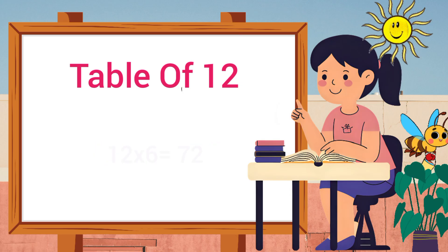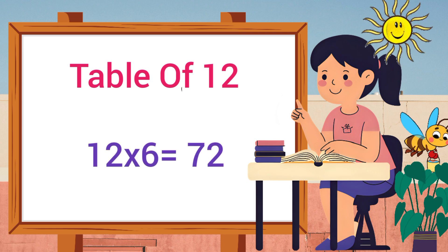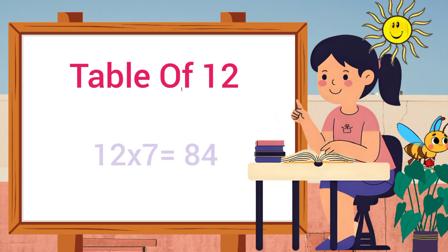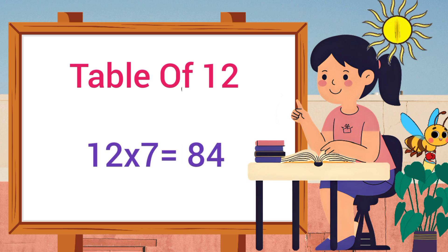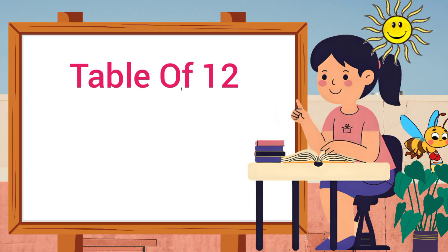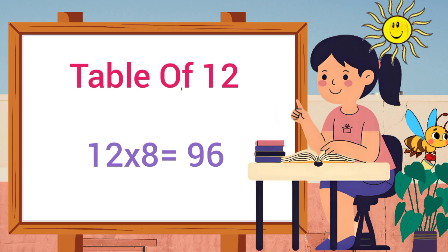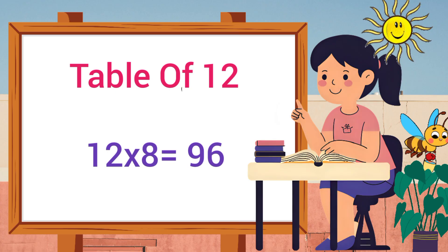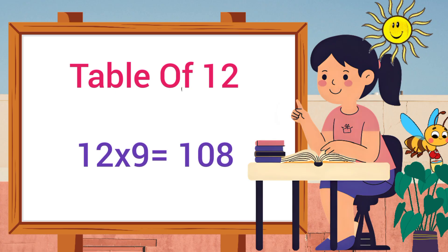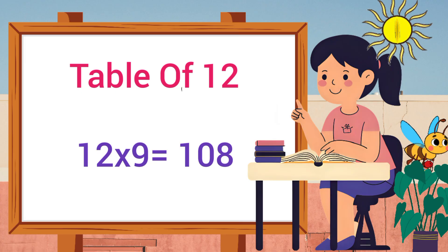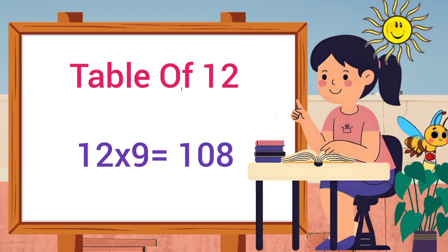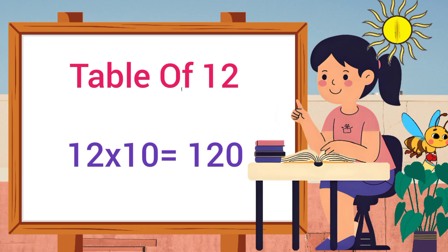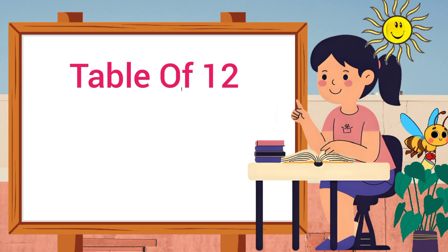Twelve sixes are seventy-two, twelve sevens are eighty-four, twelve eights are ninety-six, twelve nines are hundred-and-eight, twelve tens are one-twenty. Ready?